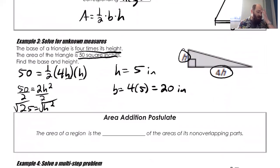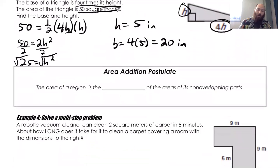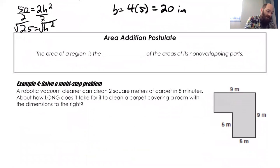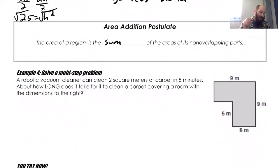Last idea today, and that's what's called the area addition postulate. Area addition postulate states that the area of a region is the sum of the areas of its non-overlapping parts. So what that means is that when I look at this shape, we've got a robotic vacuum cleaner, can clean two square meters of carpet in eight minutes. How long does it take for it to clean a carpet covering a room with the dimensions to the right? So it says the dimensions of the room talks about cleaning two square meters. So what I need to do is I need to first find the area of this.